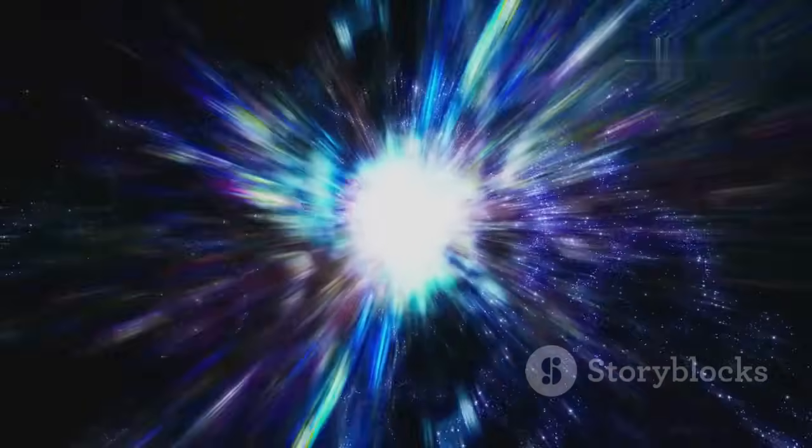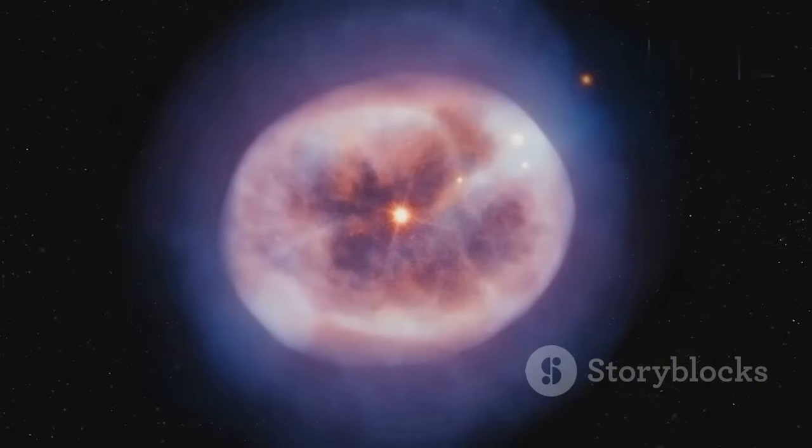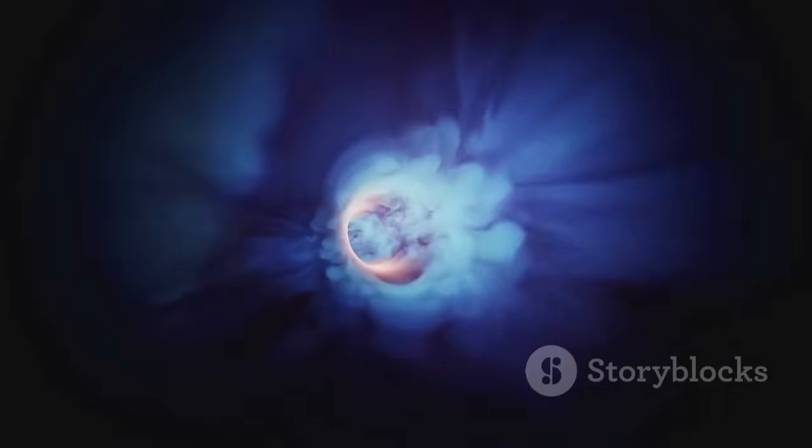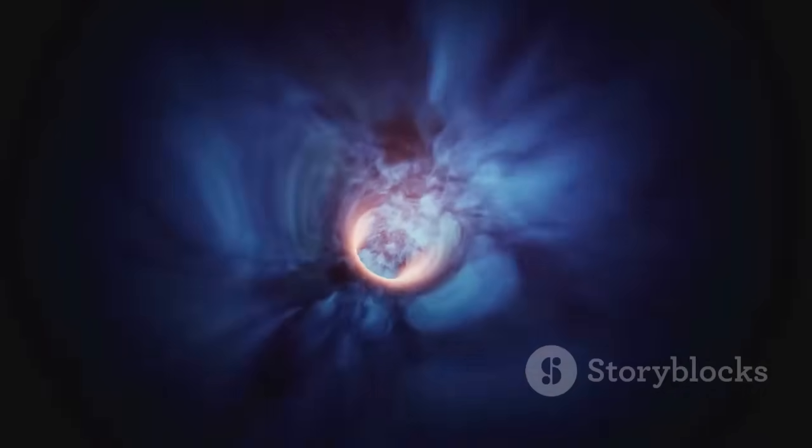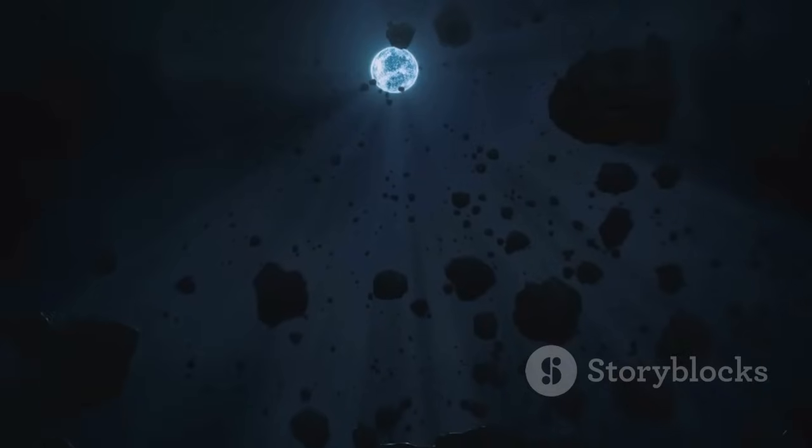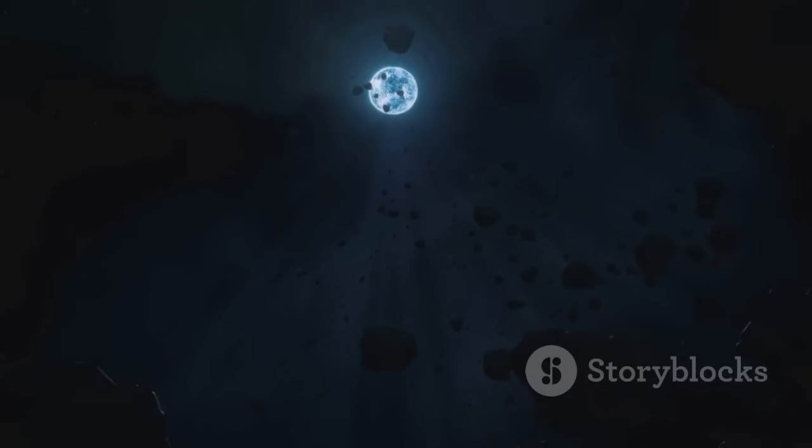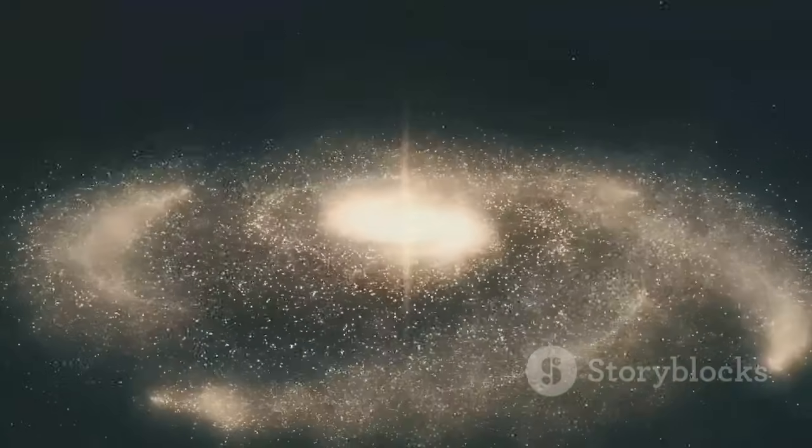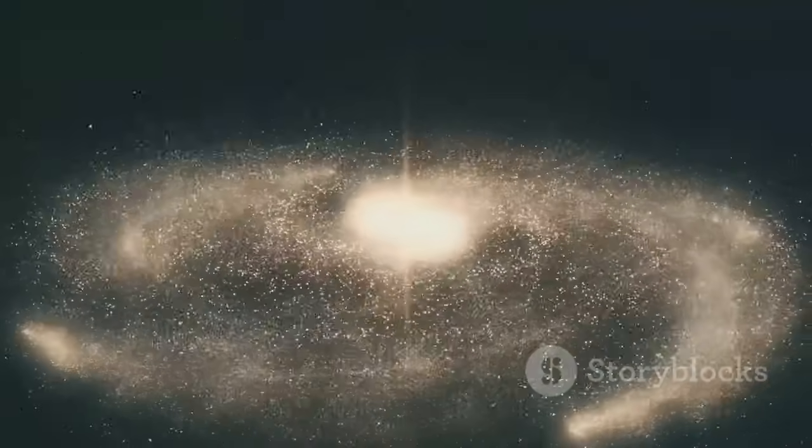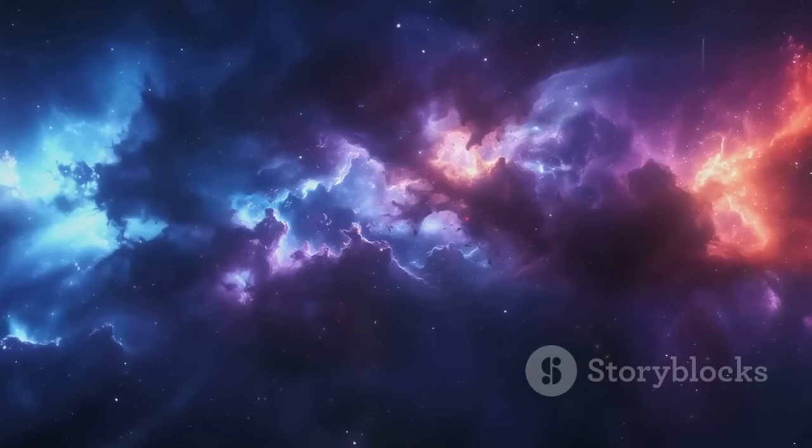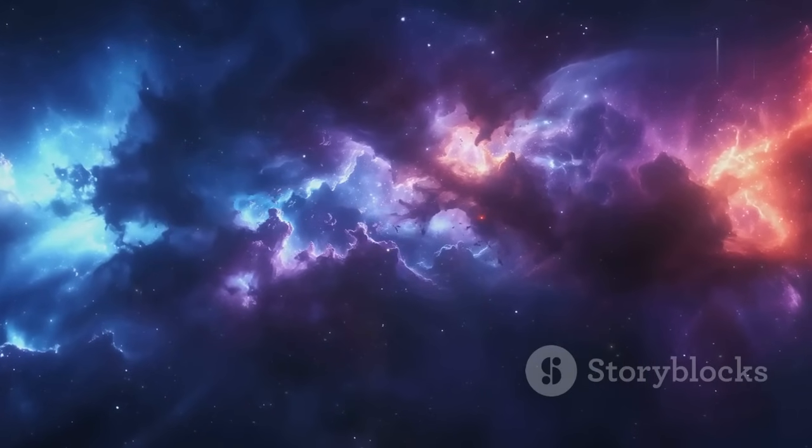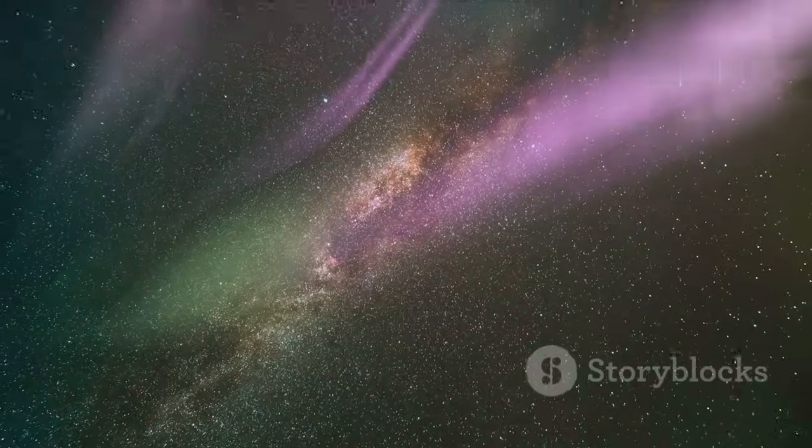The star becomes unstable, shedding its outer layers into space. These glowing shells form a planetary nebula, a beautiful cosmic relic. At the center remains a white dwarf, a tiny dense hot core. The white dwarf slowly cools over billions of years, a silent ember of a once brilliant star. The material shed enriches the galaxy, seeding future generations of stars and planets. The death of a sun-like star is gentle but its legacy endures. Even in death stars give back to the cosmos.